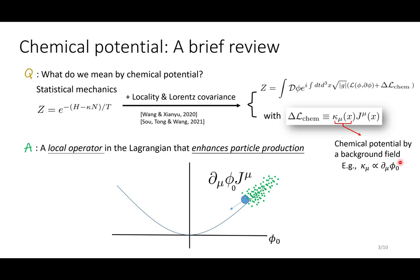For example, the rolling speed of the inflaton, phi_dot. This operator should be able to enhance particle production. So the physical picture is very simple. You have a rolling inflaton background. On its trail, lots of massive particles are produced because of this chemical potential.